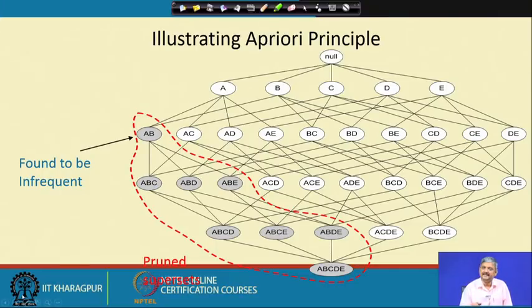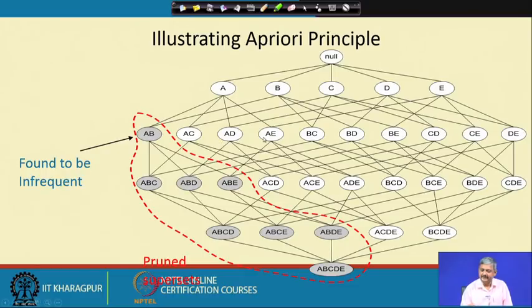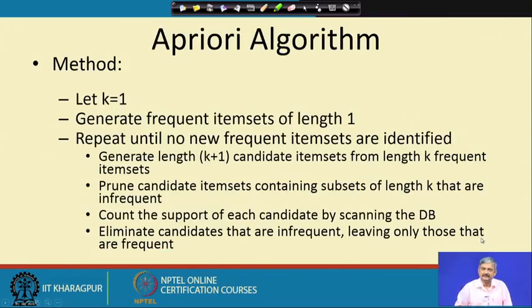How do you produce 2-item sets from larger ones? Suppose A, E and A, D are both frequent. You can join these two if they differ by only one element. Here D and E differ, so if we join them we get A, D, E. What we do in the a priori algorithm is that from k frequent item sets we produce k+1 size frequent item sets by joining two item sets that share all items except one.